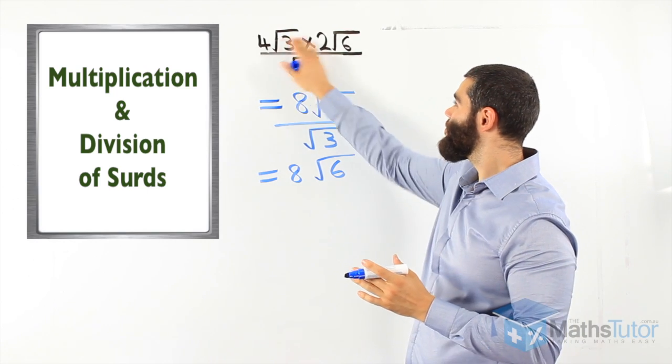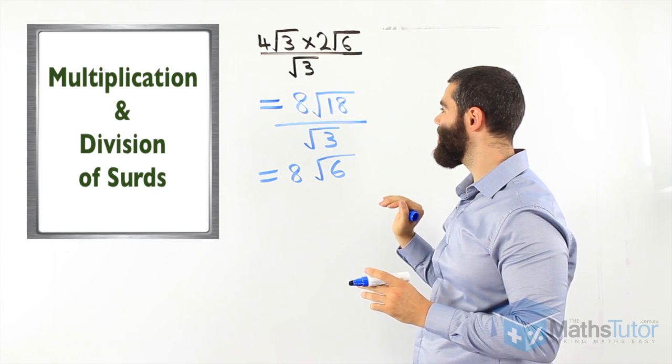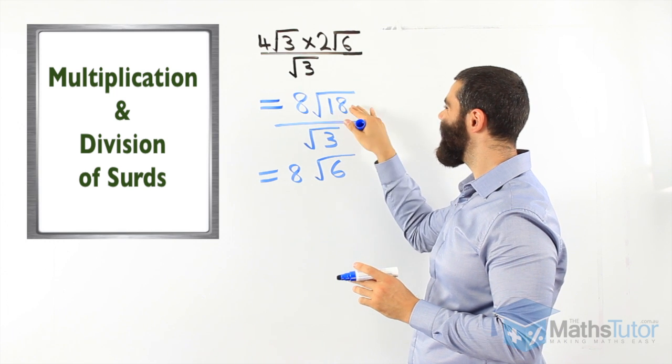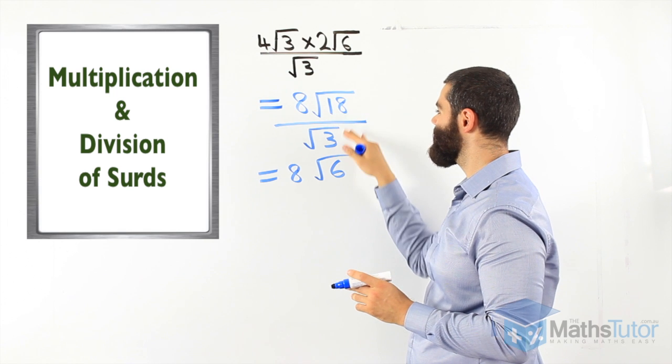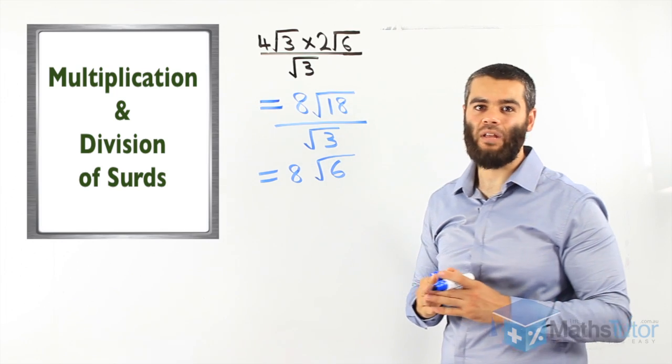It's not hard. We finish off the top, the numerators, we multiply them together and divide by the surd, if we can. If, yes, we can in here. 18 divided by 3 can be simplified. 18 divided by 3 is 6. 8 root 6 is our final answer. Let's do two more examples.